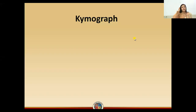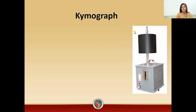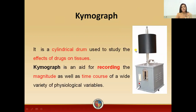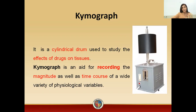Students, in this lecture we will study what is a kymograph and how you can operate it. This is basically a kymograph, and there can be different types depending on the model. It consists of a cylindrical drum to record the effect of a drug on isolated tissue. This drum will have a graph that is actually the kymogram. The kymograph is basically an aid for recording the magnitudes as well as the time course of different physiological variables or the effect of different drugs on isolated tissue.